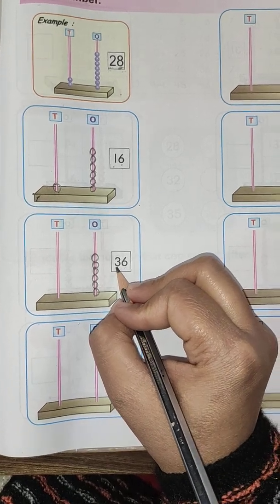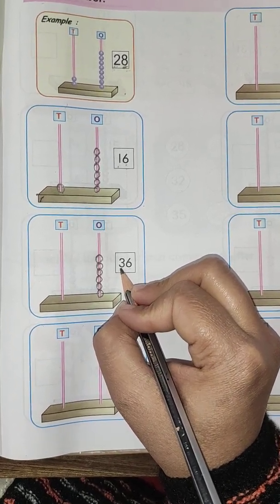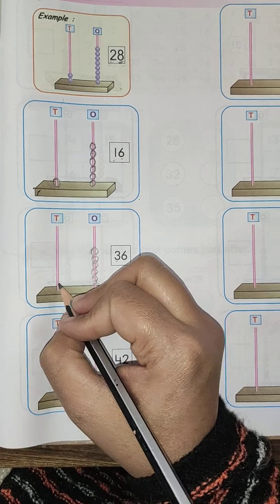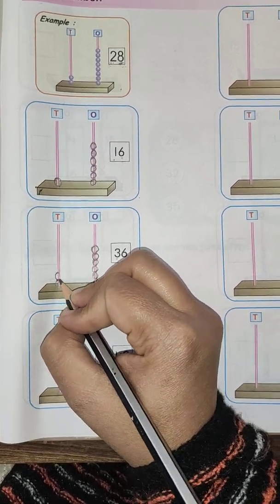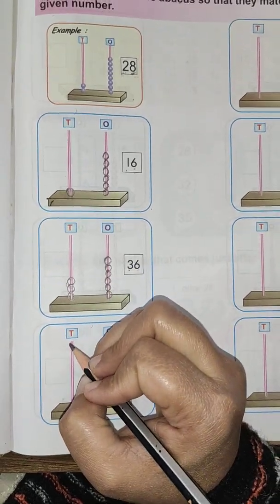In place of tens, the number is 3. So we draw 3 in place of tens: 1, 2, 3.